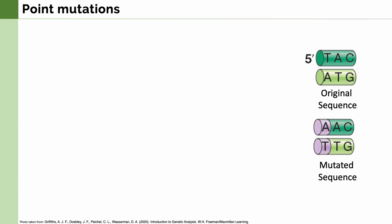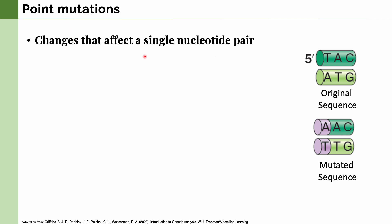Let's now talk about point mutations. There are many types of mutations, but for this discussion, we will be focusing only on point mutations. These are changes that affect a single nucleotide pair. In this example, we can see a point mutation. The original sequence of this DNA strand is TAC, and the complementary strand is ATG. When a point mutation happens, one of these base pairs is changed, and the mutated sequence now reads AAC and TTG.